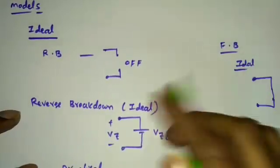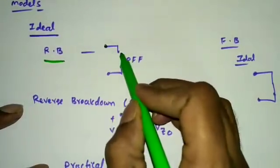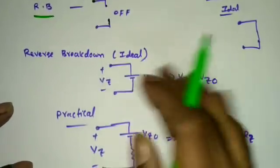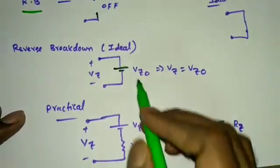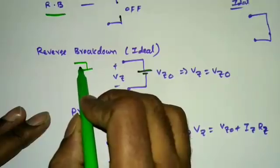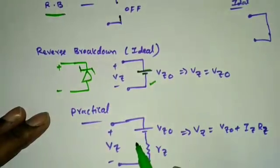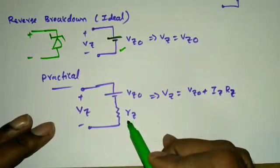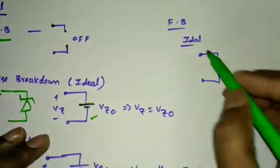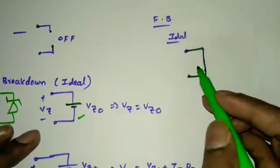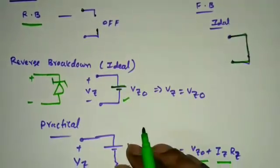For modeling the Zener diode: when reverse biased but not in breakdown, it is simply open circuit. At breakdown, ideally it is replaced by a voltage source Vz0, with positive terminal at cathode and negative at anode. Practically, we include Rz so Vz = Vz0 + Iz·Rz. In forward bias, ideal means short circuit; practically a 0.7 V or 0.3 V drop is used.